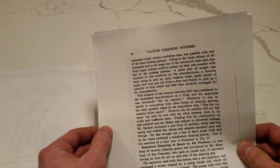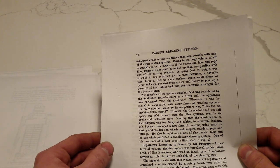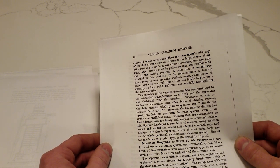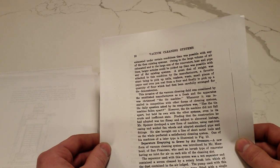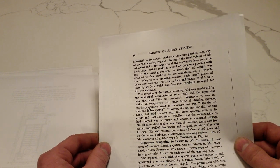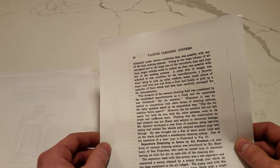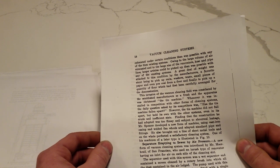This invasion of the vacuum cleaning field was considered by the established manufacturers as a freak, and the apparatus was christened the tin machine. Whenever it was installed in competition with other forms of cleaning systems, the daily question asked by its competitors was, has the tin machine fallen apart? However, the tin machine did not fall apart, but held its own with the other systems even in its crude and inefficient state.